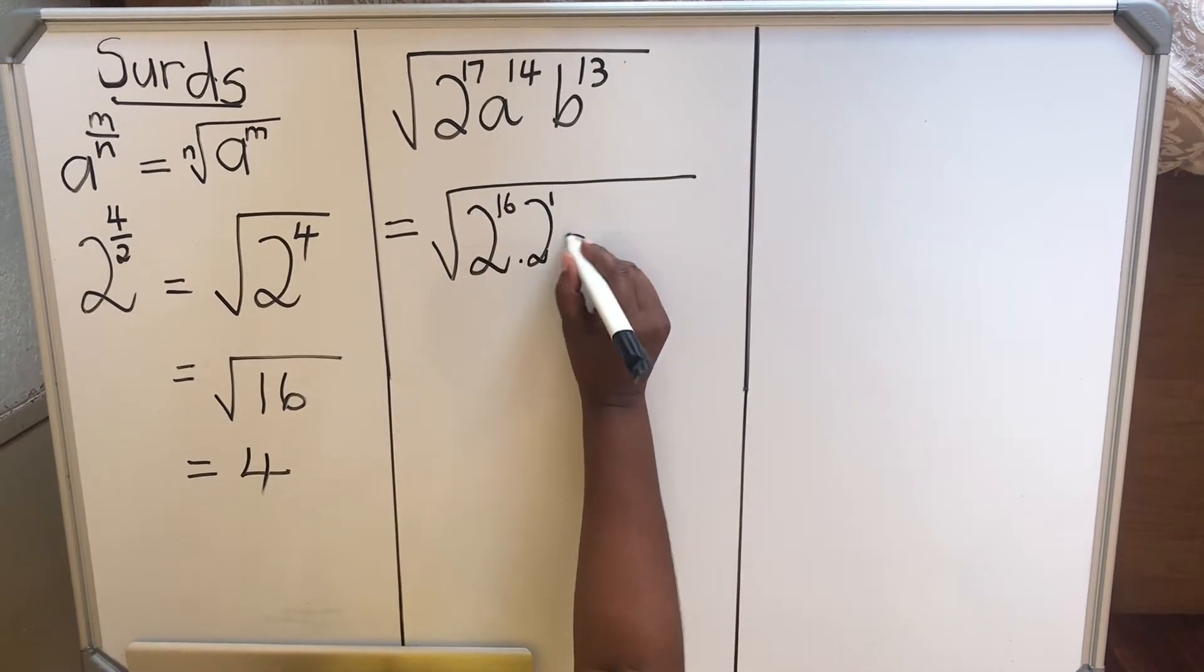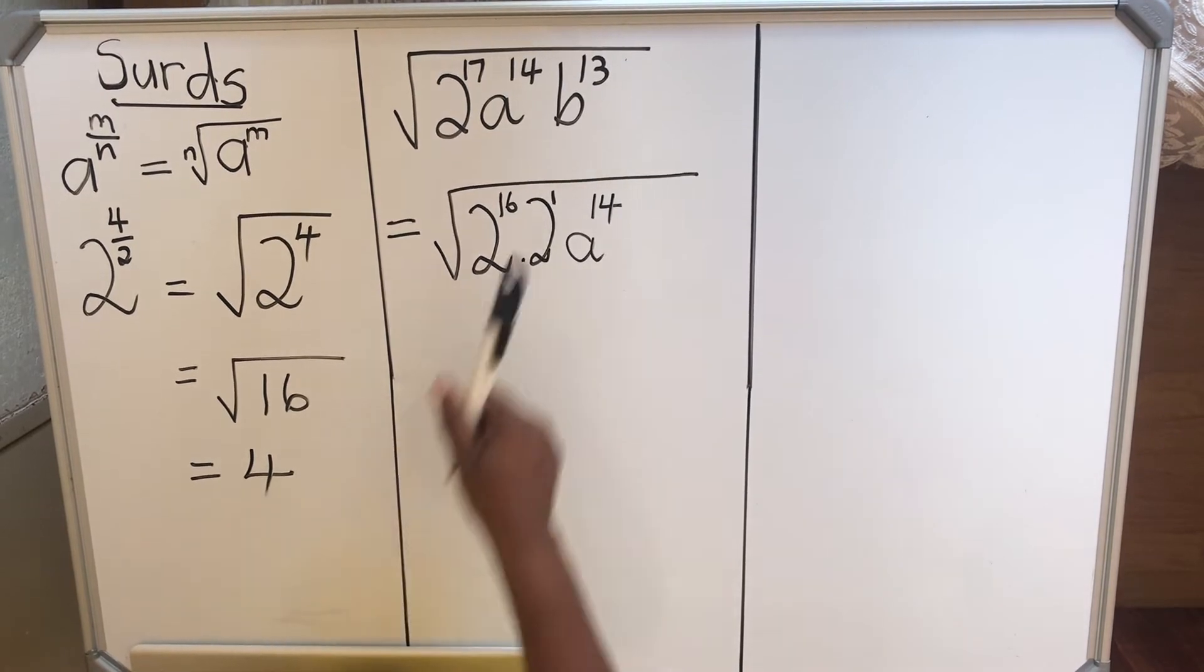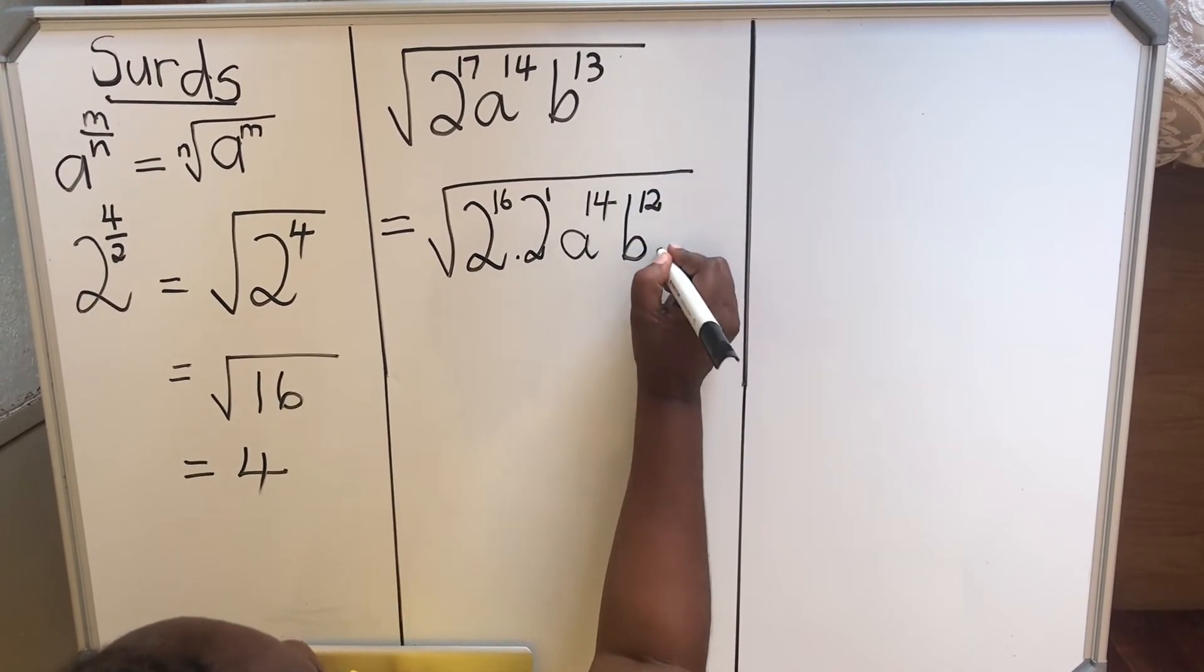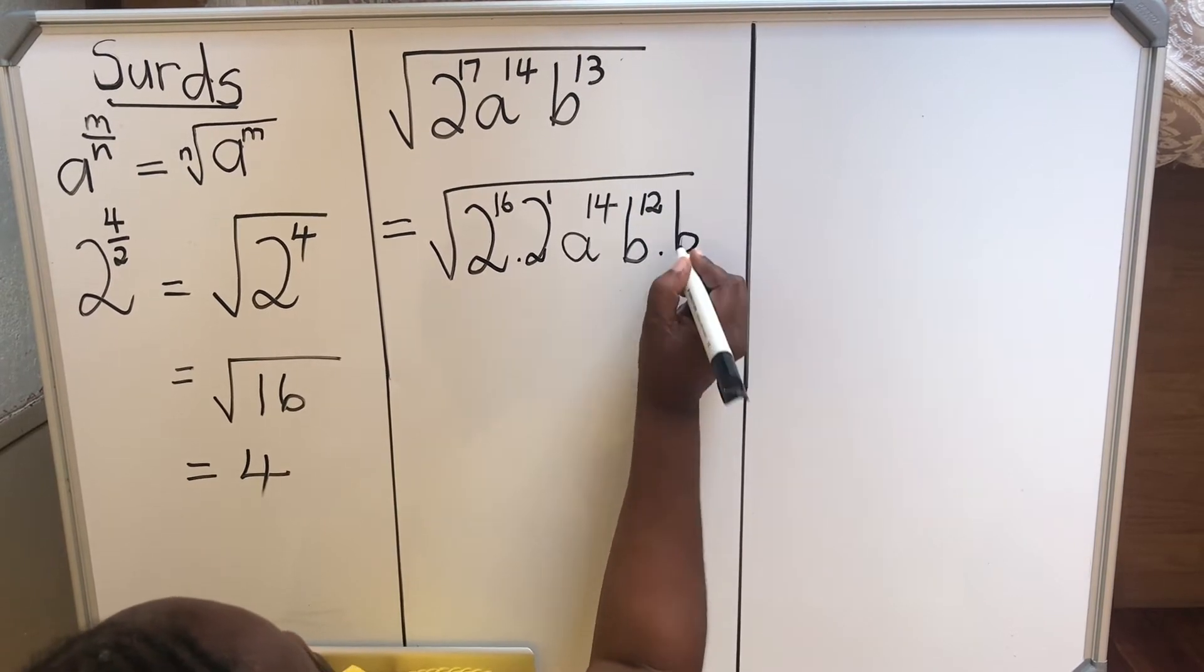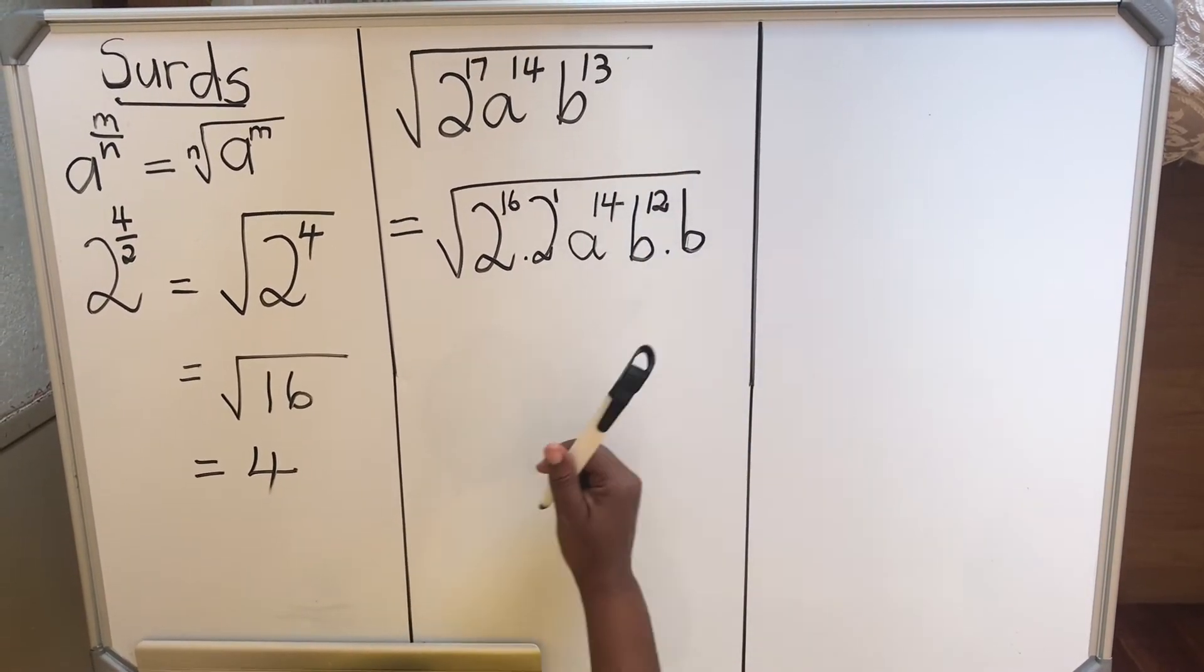a to the power 14, 14 is a factor of 2, so it's not a problem. But b will have b to the power 12 times b, because b is b to the power 1. So we split it to 12 and 1.